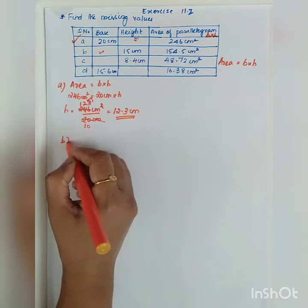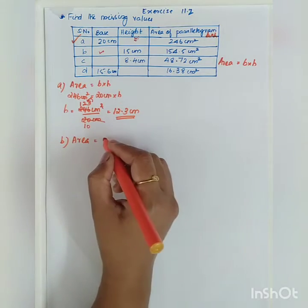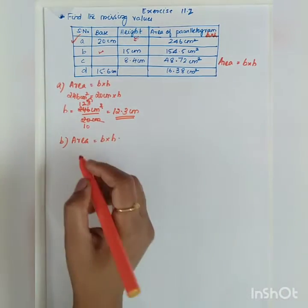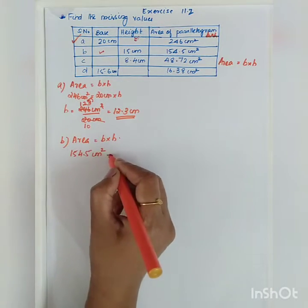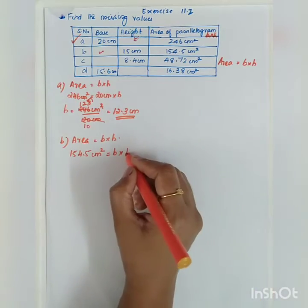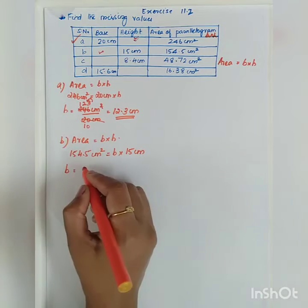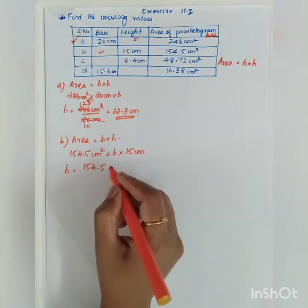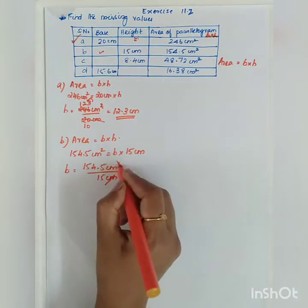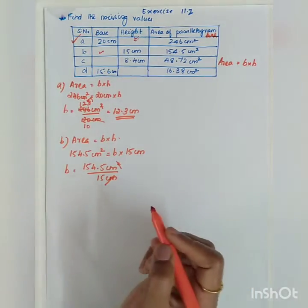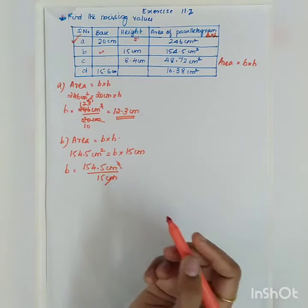Now Part B: again area is given and we have to find the base. Area equals base into height — the area is 154.5 centimeter square and height is 15 centimeter. So base equals 154.5 centimeter square divided by 15 centimeter. When you get a decimal division, it is better to convert into a whole number and then proceed.